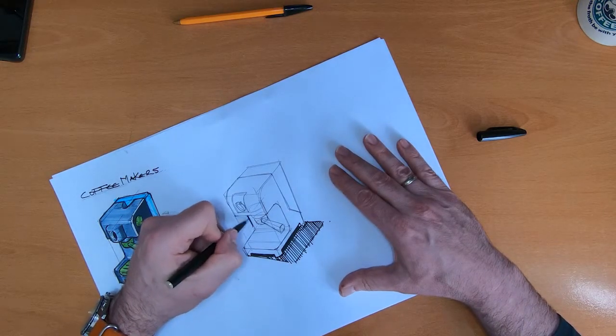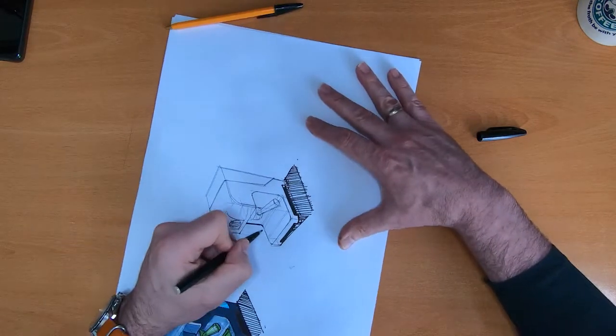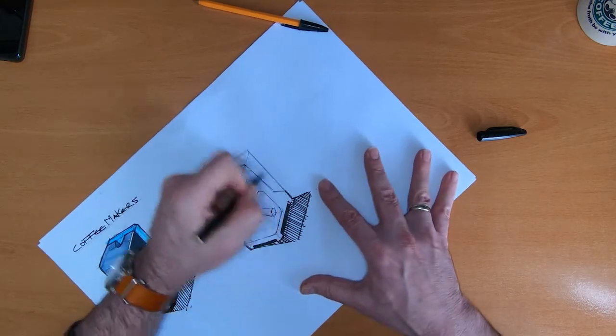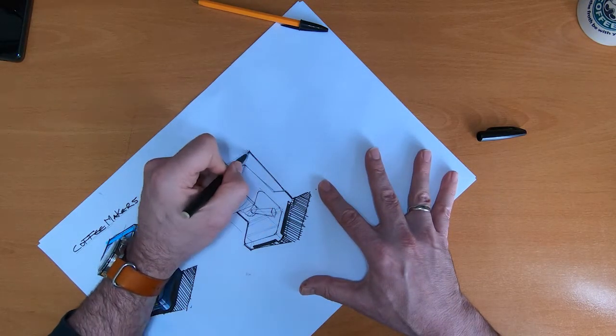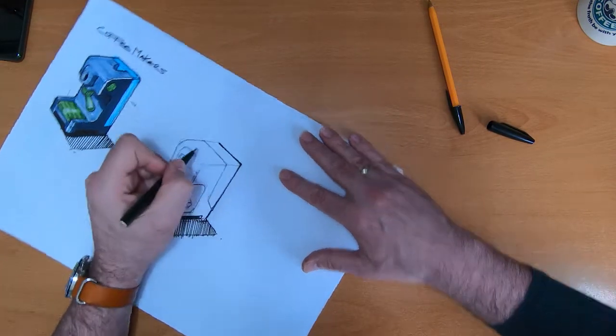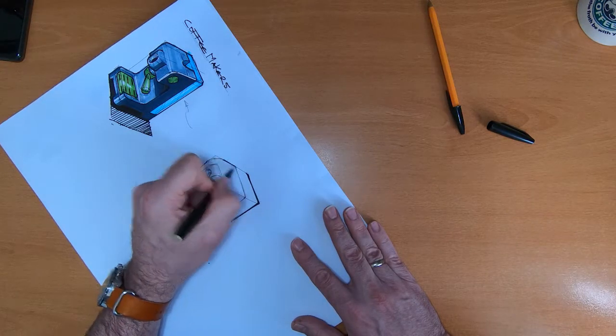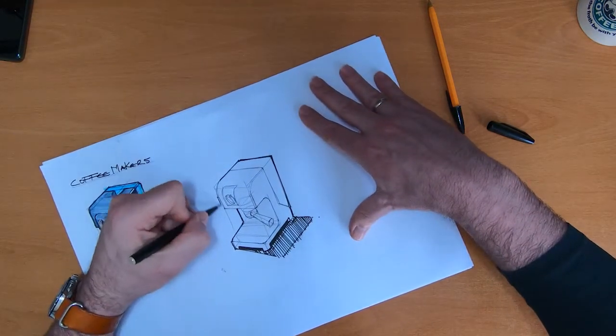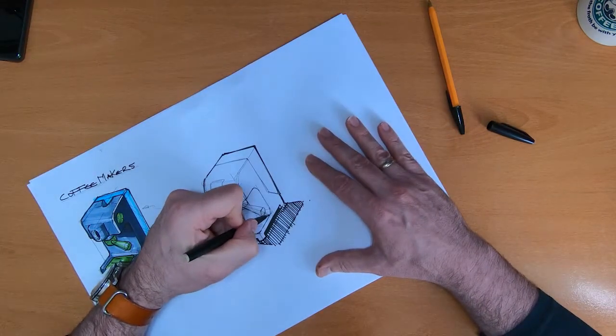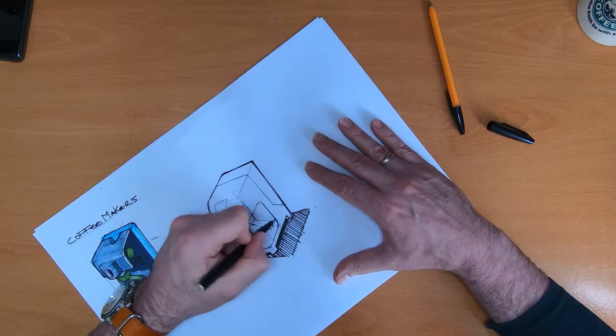Just carry on round, establish a few extra lines with a darker line weight. Maybe there's a slight chamfer there.